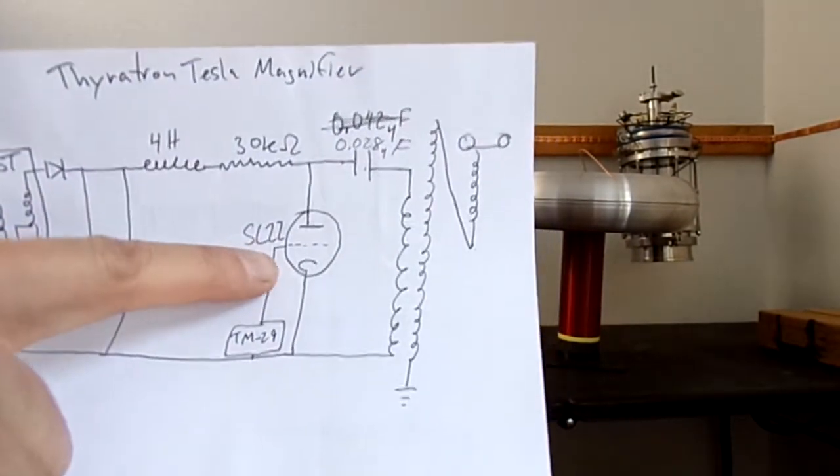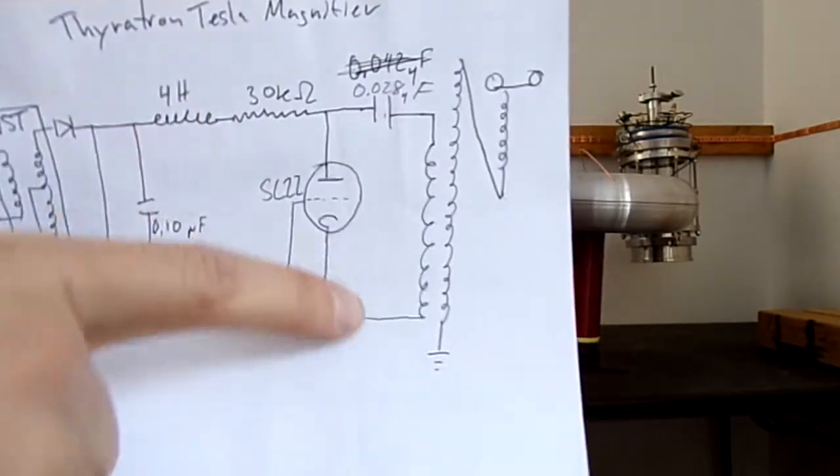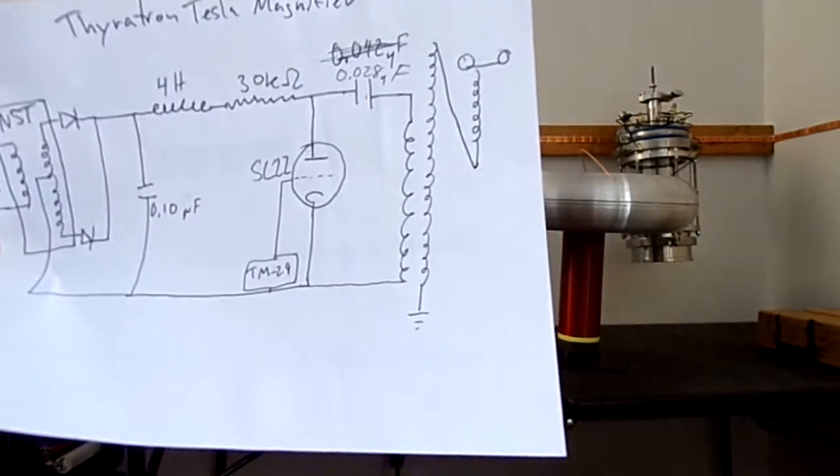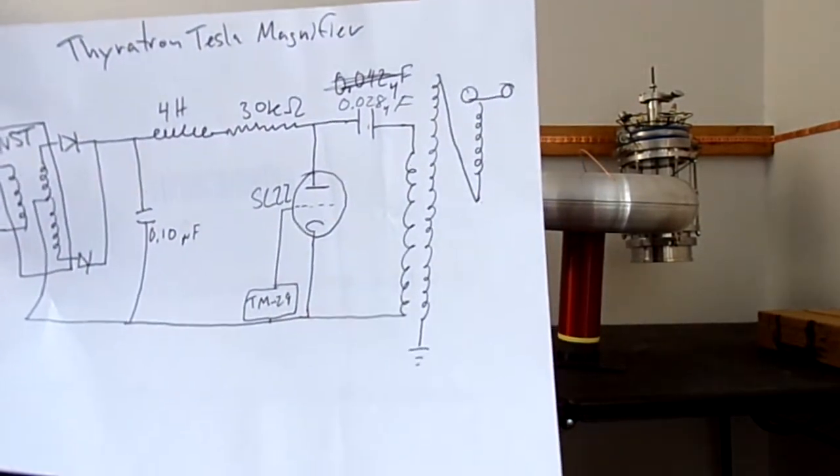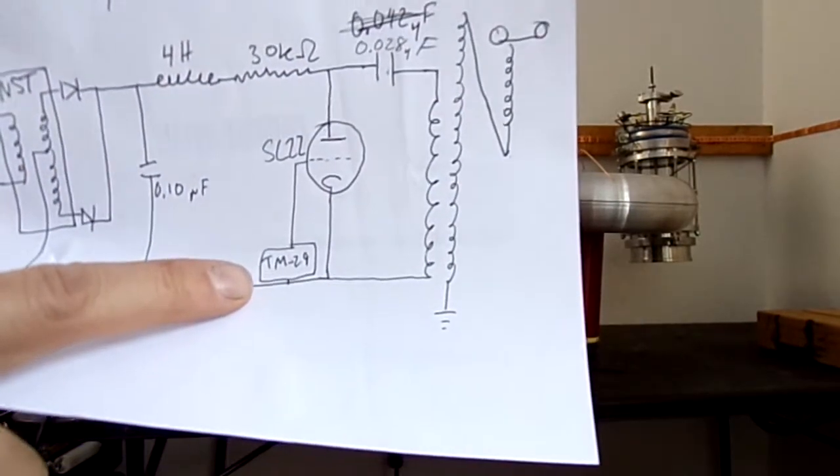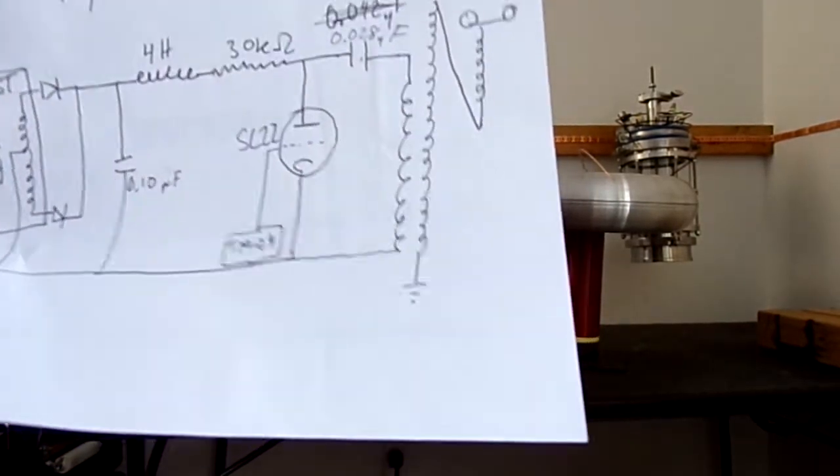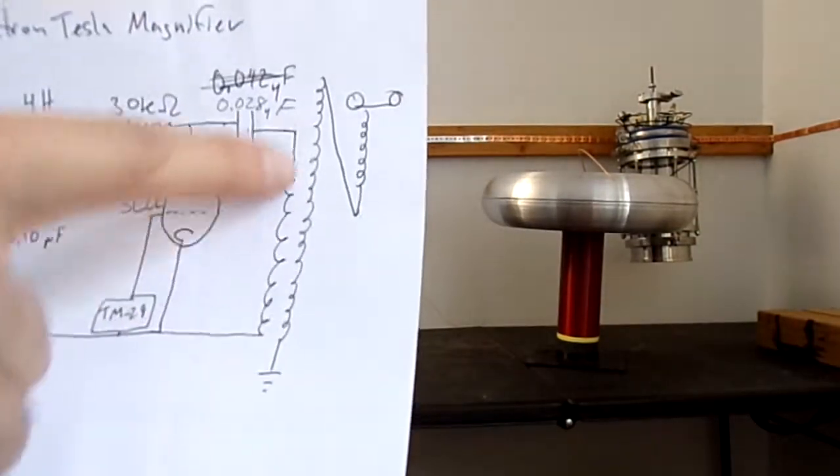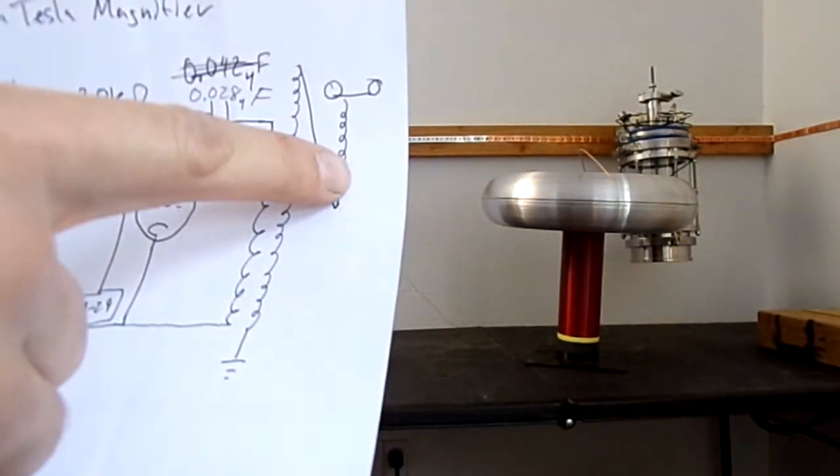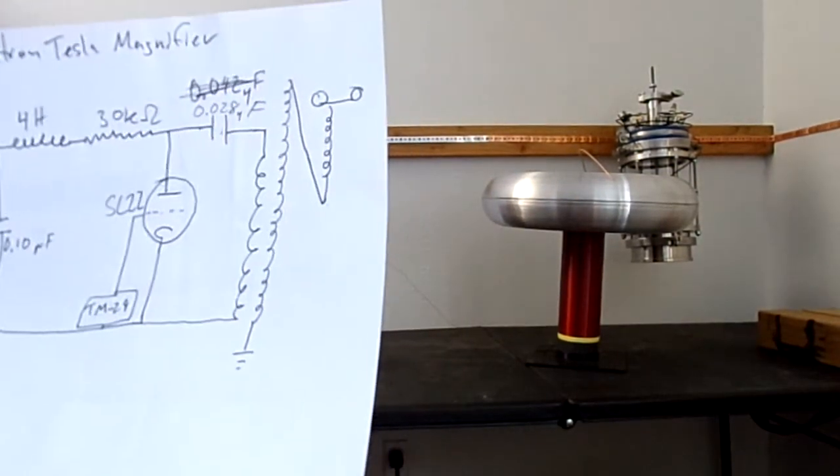And I got a 5C22 Thyratron switching the tank capacitor to ground and it's driven by an EG&G TM-29 Thyratron grid driver. I got my primary and secondary and then I have it attached to an extra coil there.